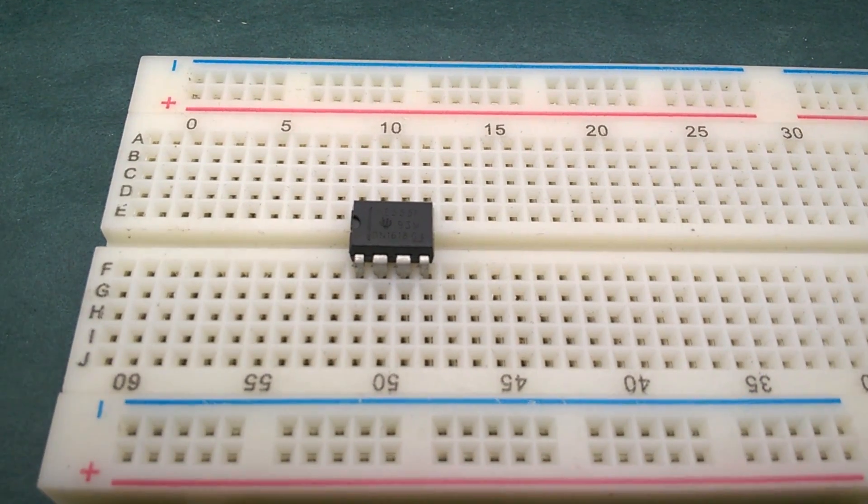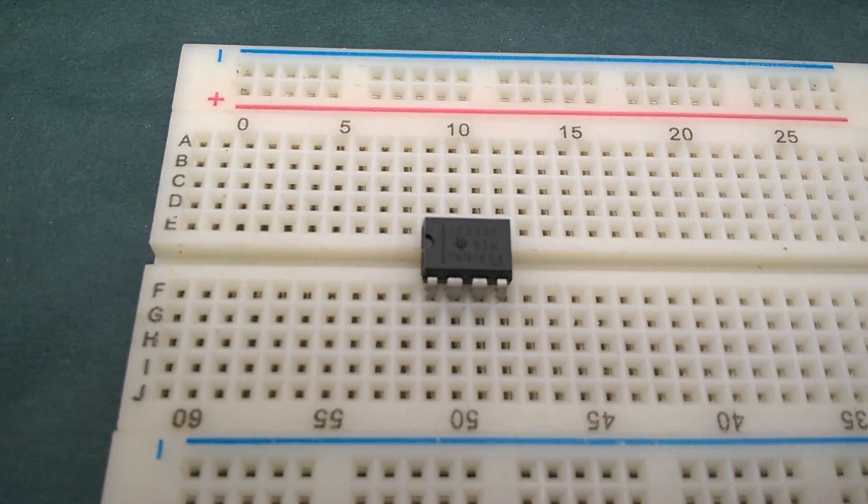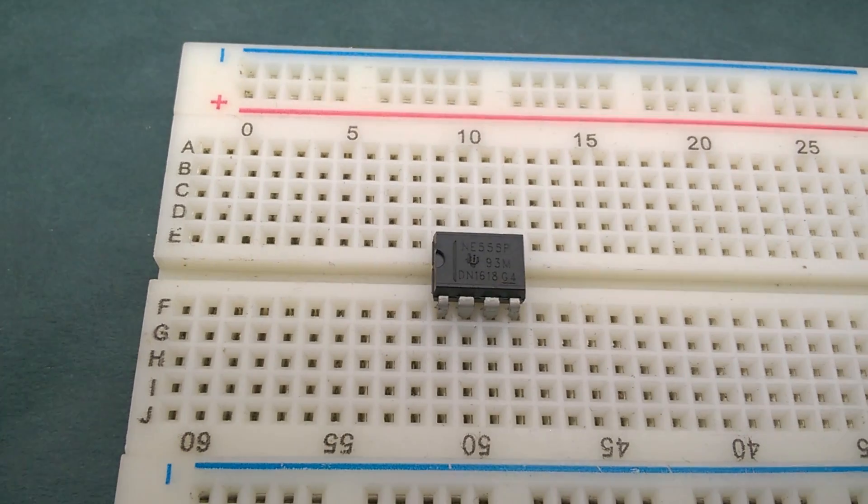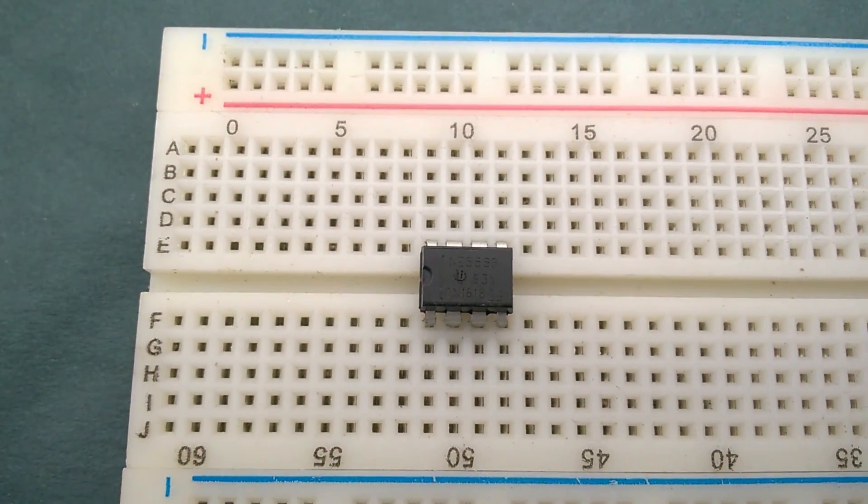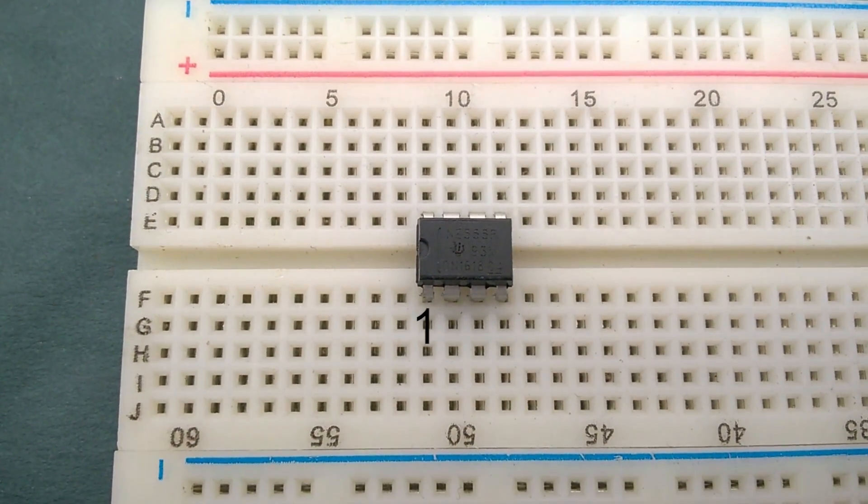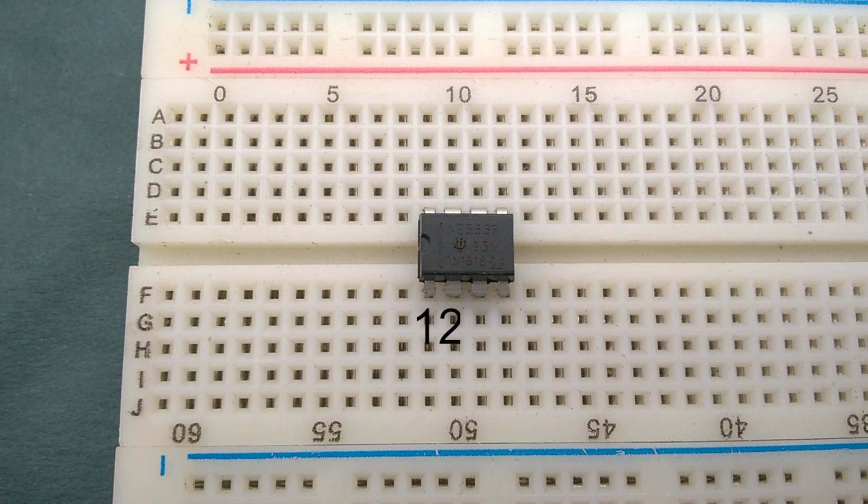So, let's start by placing the 555 timer IC on the breadboard with its notch facing left so that the pin numbers start from here. This is pin 1, this is pin 2, 3, 4, 5, 6, 7 and 8.